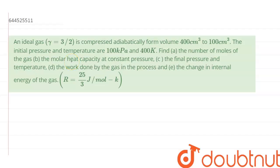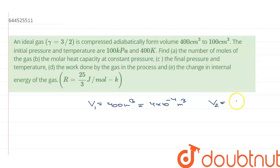An ideal gas with gamma equal to 3/2 is compressed adiabatically from volume 400 cm³ to 100 cm³. So we have V1 equal to 400 cm³, which in m³ is 4 × 10⁻⁴ m³. And V2 similarly would be 100 × 10⁻⁶ m³, equal to 10⁻⁴ m³.